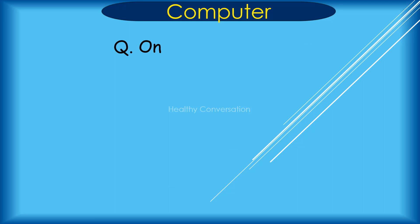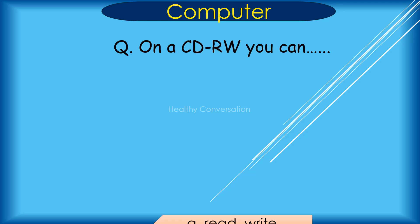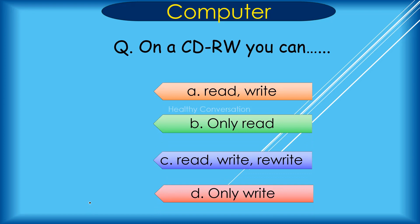Question: On a CD-RW, you can dash. A. Read and Write, B. Only Read, C. Read, Write and Rewrite, D. Only Write. Correct answer is C. Read, Write and Rewrite.